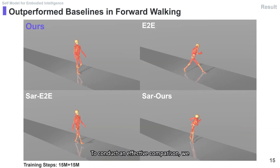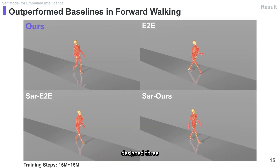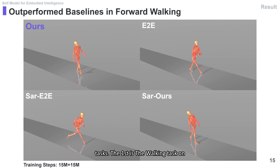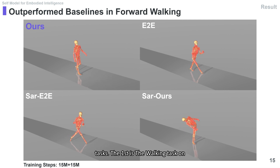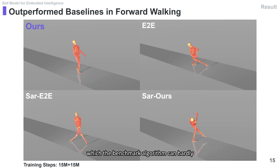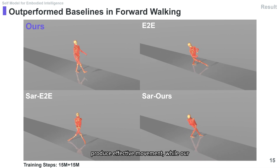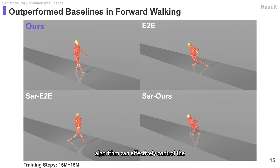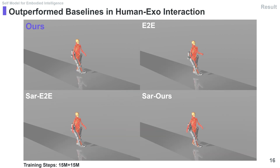To conduct an effective comparison, we design three tasks. The first is the walking task, on which the benchmark algorithm can hardly produce effective movement, while our algorithm can effectively control the high-dimensional model to walk forward.